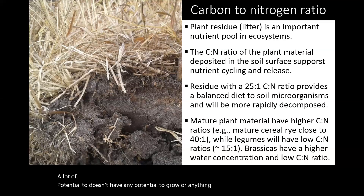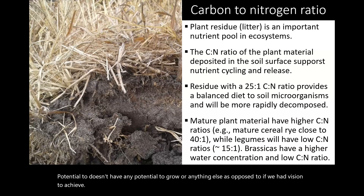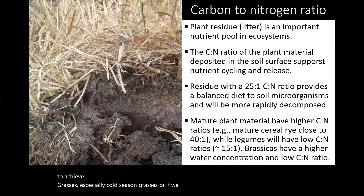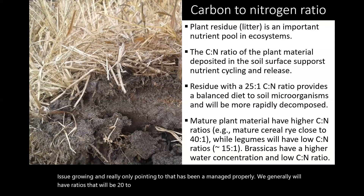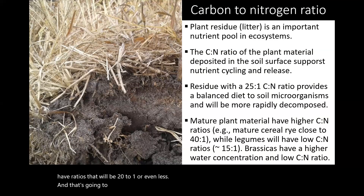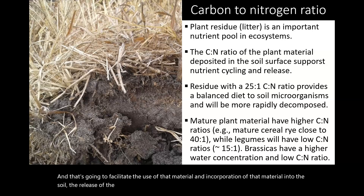As opposed to if we had vegetative grasses — especially cool season grasses — or if we have legumes that are still growing and have been managed properly, we generally will have ratios that will be 20 to 1 or even less. And that's going to facilitate the use and incorporation of that material into the soil and the release of nutrients from those materials as well.